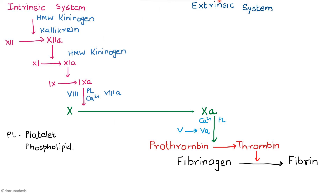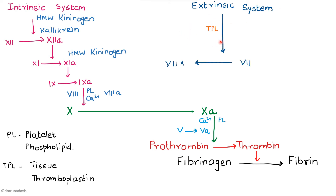The extrinsic system is triggered by tissue thromboplastin. Tissue thromboplastin activates factor 7 to factor 7a, which in turn activates factor 10 to factor 10a along with platelet phospholipids and calcium. This is a rough outline of the mechanism of hemostasis.